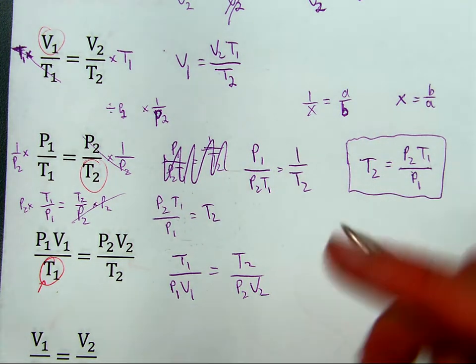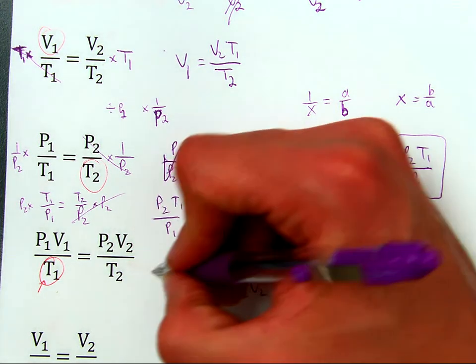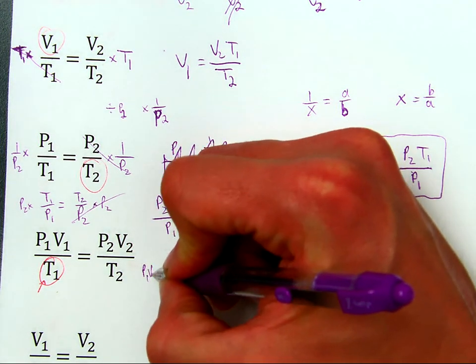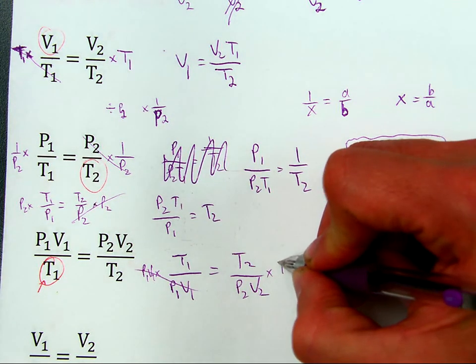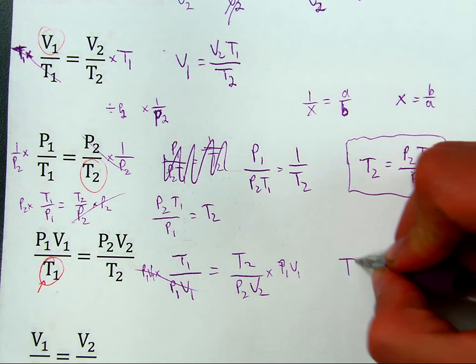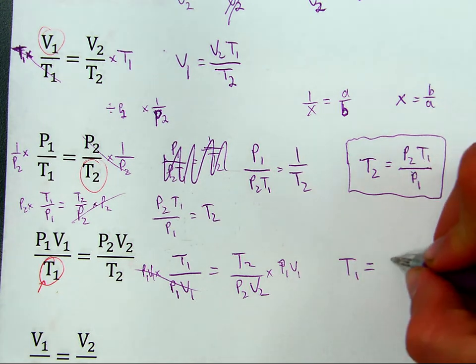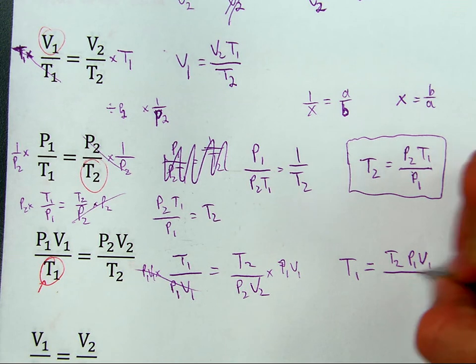Alright, well, then, try and get T1 by itself. So, I'll times both sides by P1, V1. P1, V1 times this. These cancel. Times this by P1, V1 also. So, giving me a final version of T1 equals, T2, P1, V1 over P2, V2.